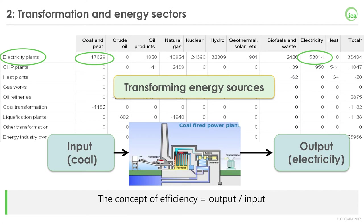Many other types of transformation exist as well — oil refineries and coal liquefaction plants, for example, are two other major transformation processes. Also, the fact that we have a clear output and input allows us to calculate transformation efficiencies, which are really useful to assess data quality.